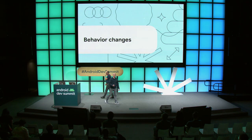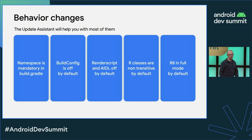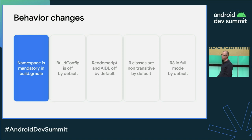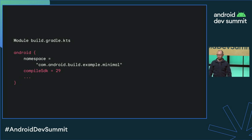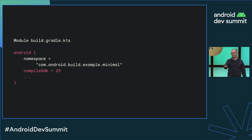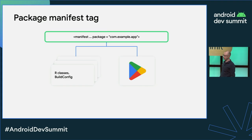Thanks, Jerome. The upgrade assistant will guide you through most of the behavior changes. However, as Android developers, we need to understand the changes and their impact on our app. The first behavior change: the namespace property is now mandatory in build.gradle. Namespace is a Java or Kotlin package name for generated R classes and BuildConfigs, replacing the previous package attribute in the Android manifest.